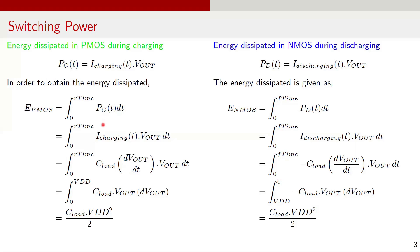Now let's substitute the value of power with I_charging times Vout. We can rewrite I_charging as C_load times dVout/dt. Further, we simplify the integral and change the variable of integration from time to voltage. After solving, the integral evaluates to (1/2) C_load VDD². In similar fashion, we can compute the energy dissipated in NMOS during discharging, which is also (1/2) C_load VDD².